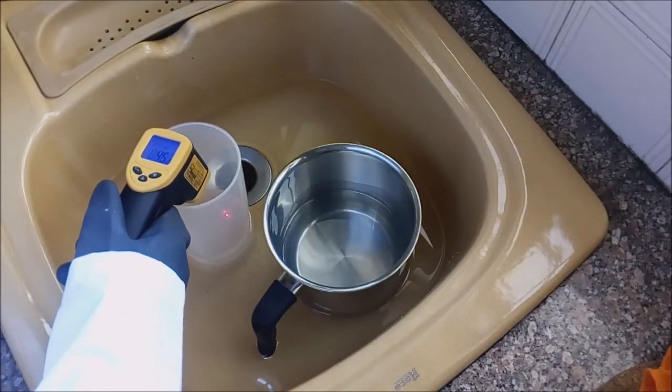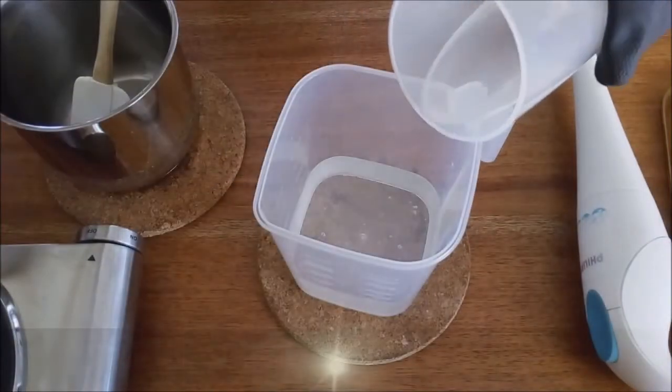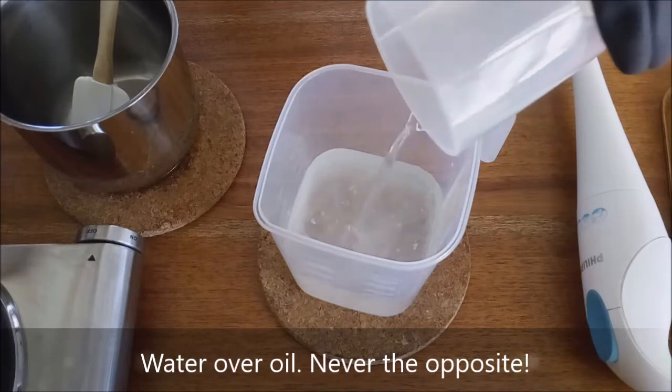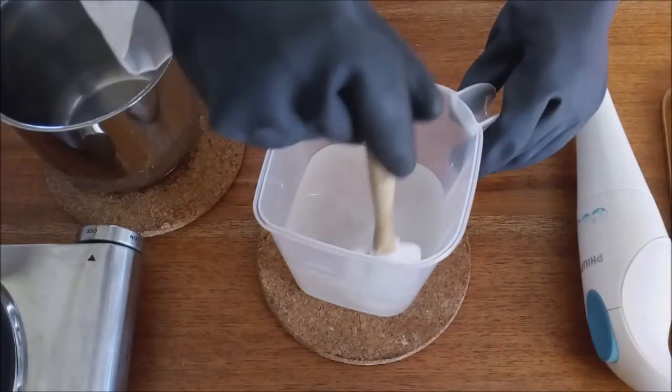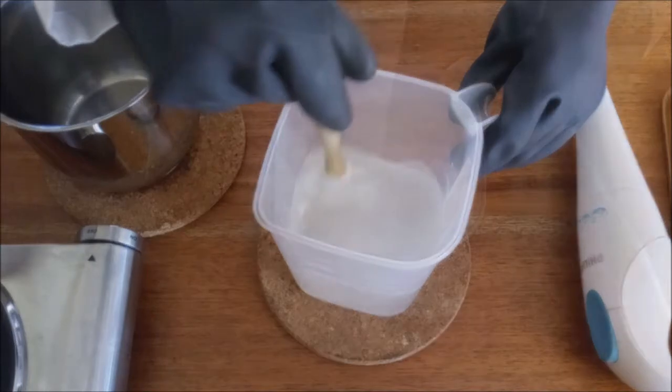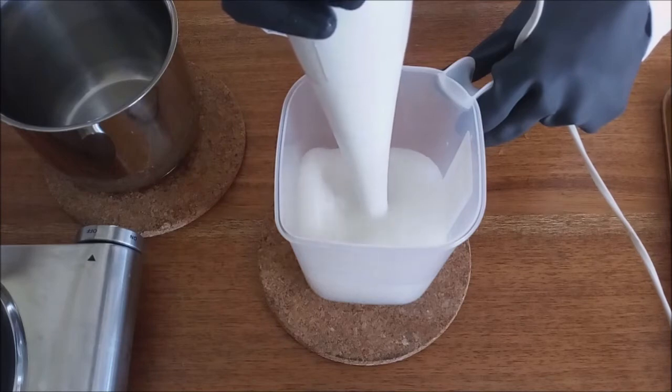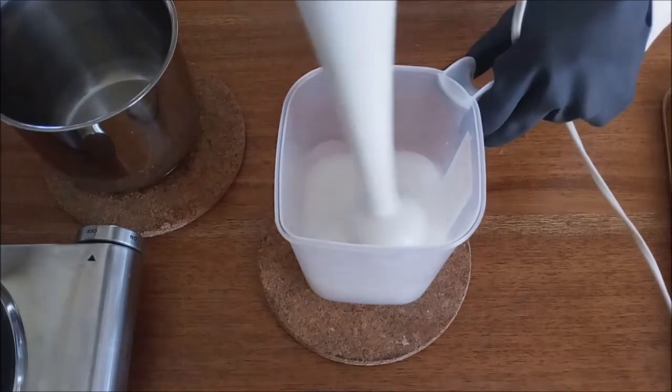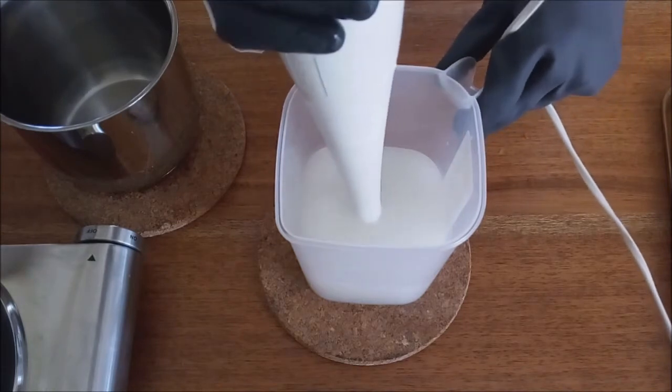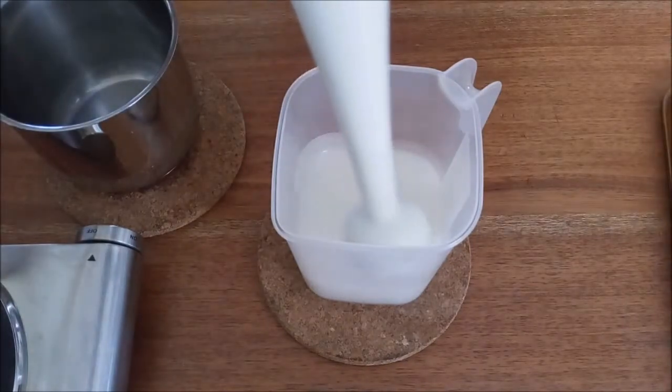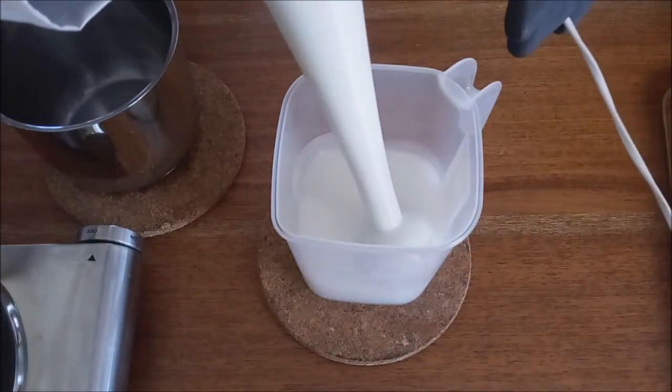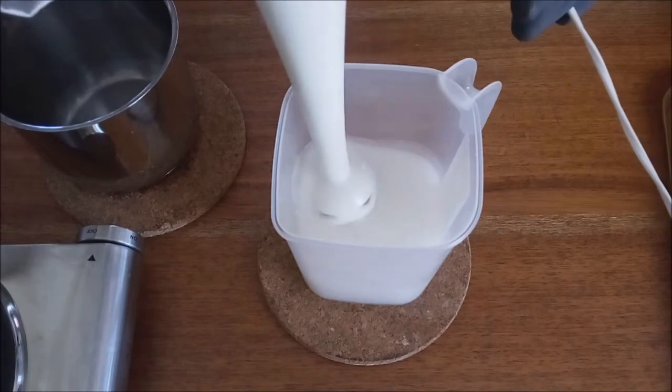As soon as both solutions are at the ideal temperature, add the water solution to the oil, never the other way around. Mix first manually with the spatula and then blend until reaching the trace. The trace is when the soap reaches the point of emulsion, that is, the point at which the solution of water and oil mix and form a viscous batter in which it is possible to identify lines when passing the spatula or blender.